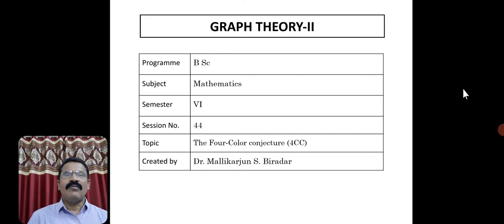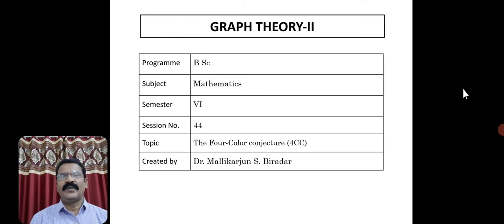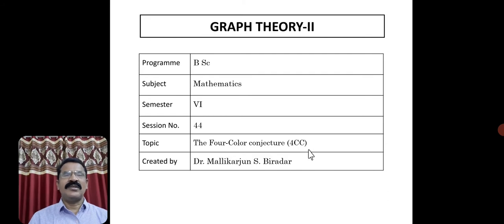Now the 44th session of Graph Theory 2. The topic is the Four-Color Conjecture. In short, it is called 4CC. So in future, I may use this short way of mentioning the Four-Color Conjecture as 4CC.